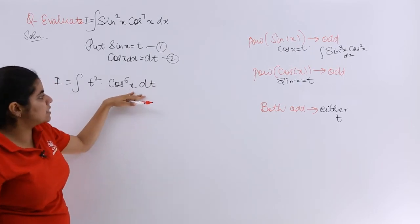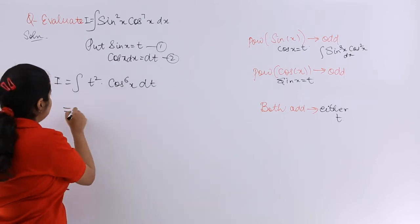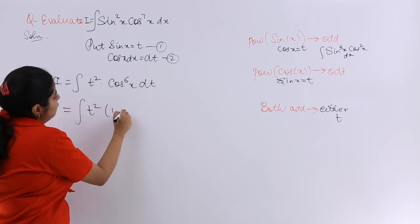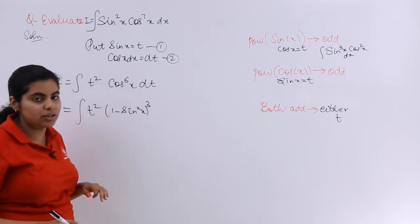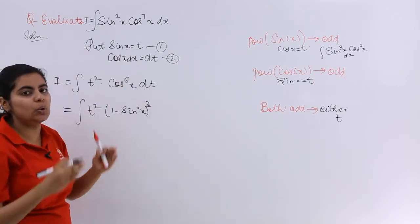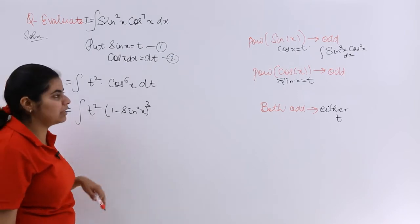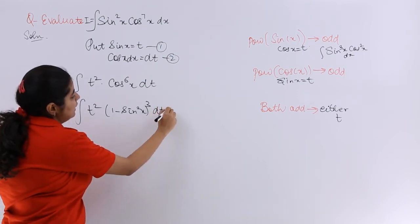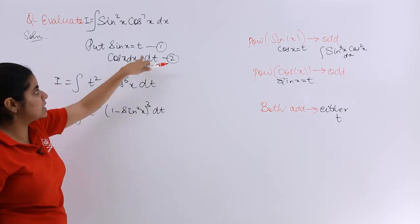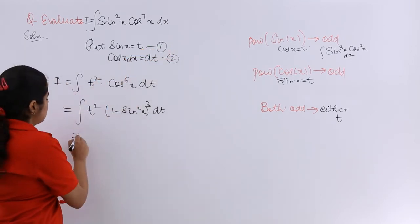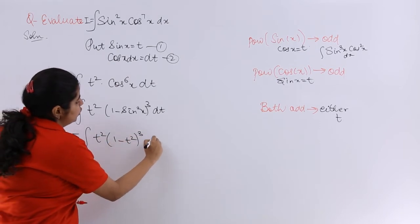Now cos⁶x can be written as (1 − sin²x)³, because cos²θ = 1 − sin²θ, so cos⁶x = (cos²x)³ = (1 − sin²x)³. Substituting sin x = t, this becomes (1 − t²)³. So the integral is t² · (1 − t²)³ dt.